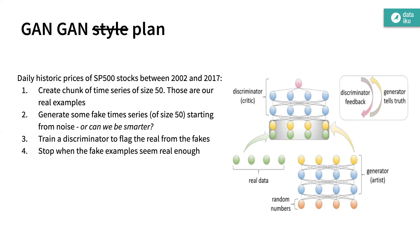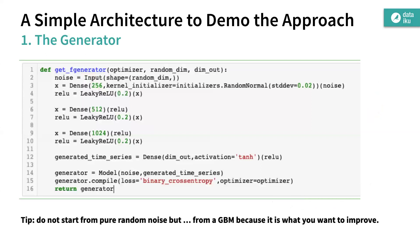It turned out that when you look at simple distance metrics between the empirical distribution, the GBM simulation, and the GAN simulation, the GAN is actually closer to the empirical return curve, though there are definitely things we could have improved.